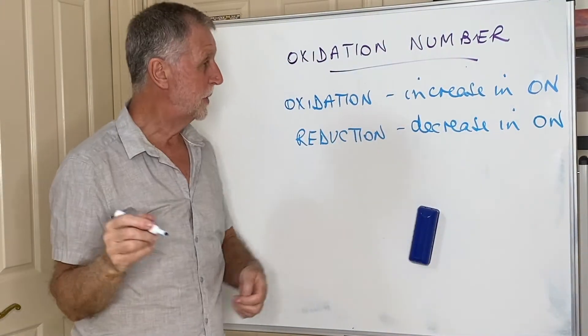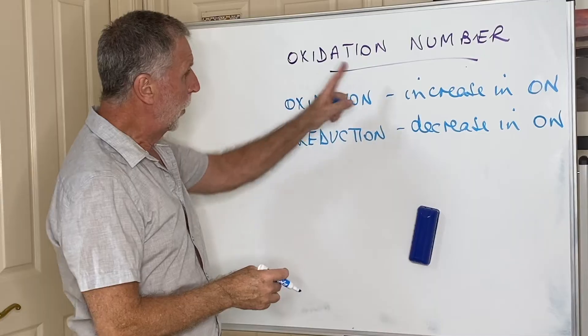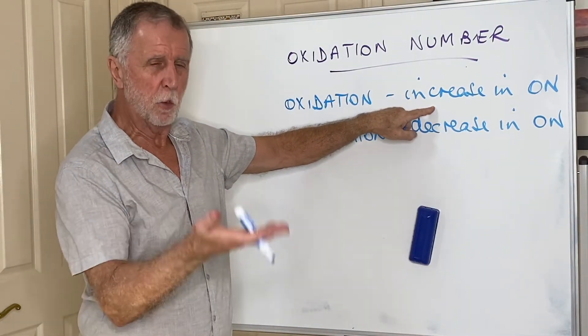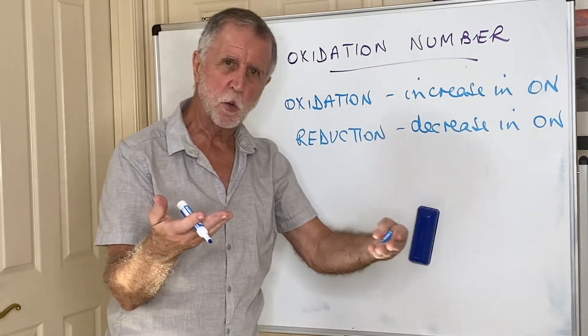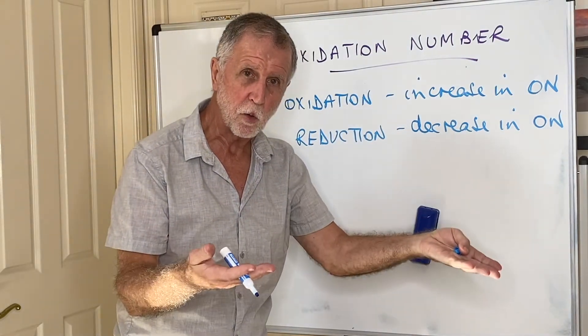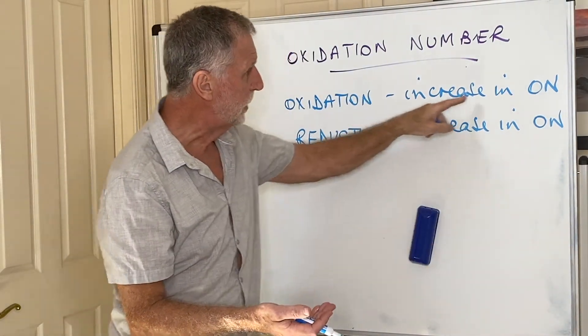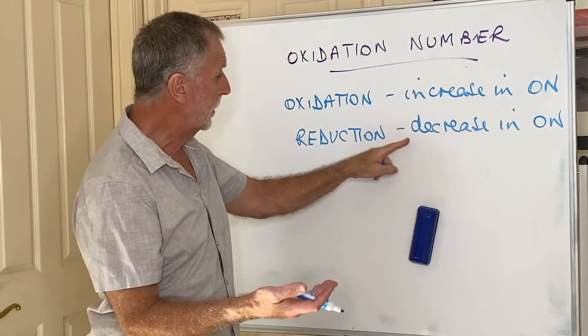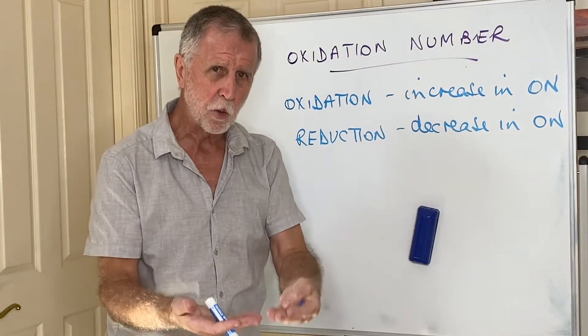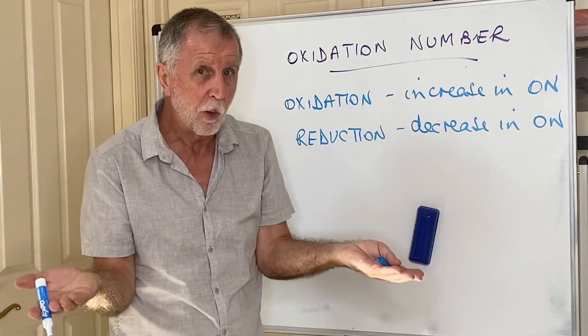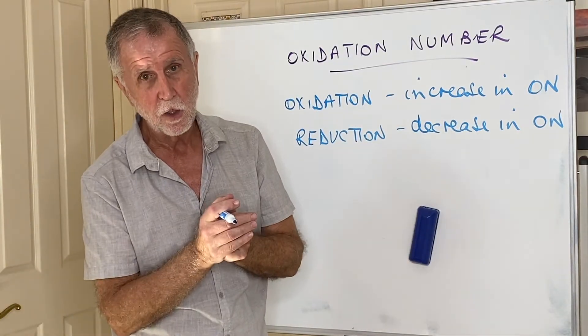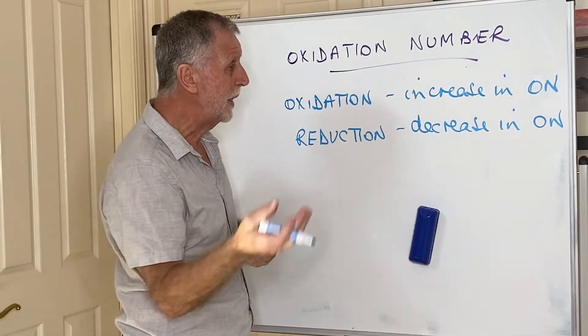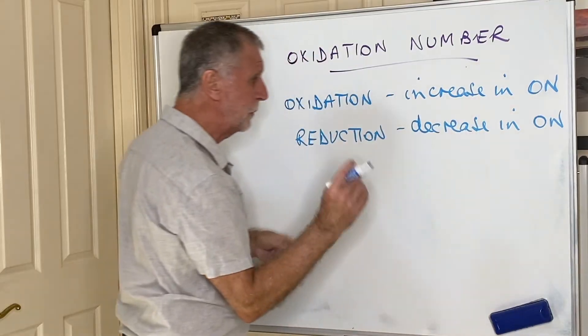The reason this works is because when oxidation number goes up, it becomes more positive. It means it's losing minuses, losing electrons. So oxidation, increase in oxidation number, is the same as loss of electrons. When an oxidation number goes down, it becomes less positive or more negative. Why? Because it's gaining electrons. So this basically is based on electron loss or gain, although it's much more difficult to see.